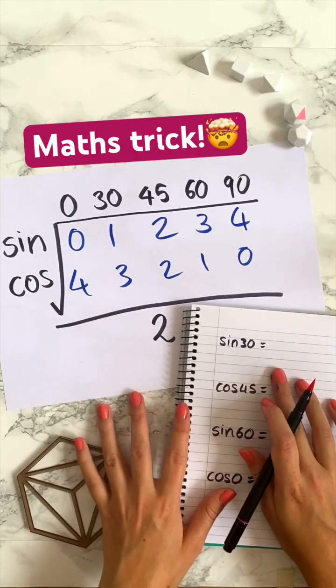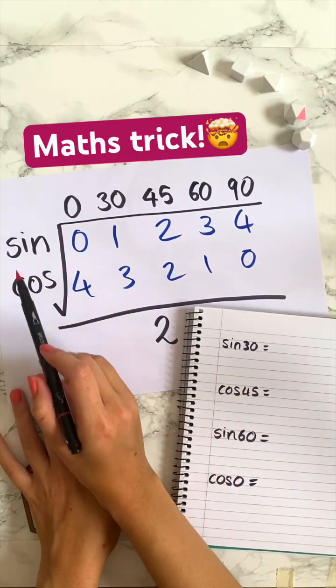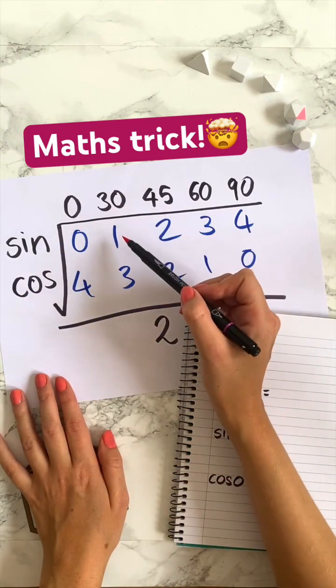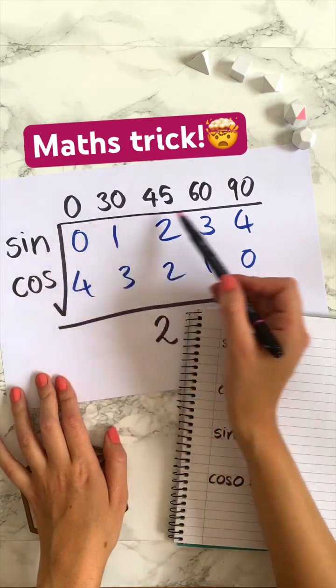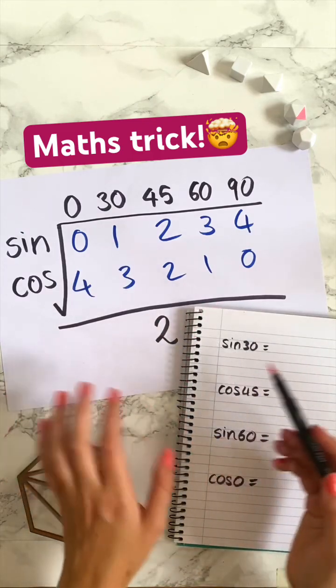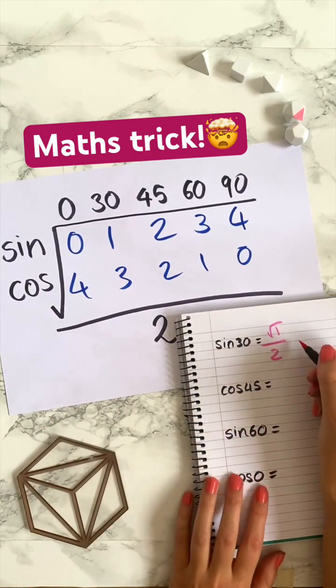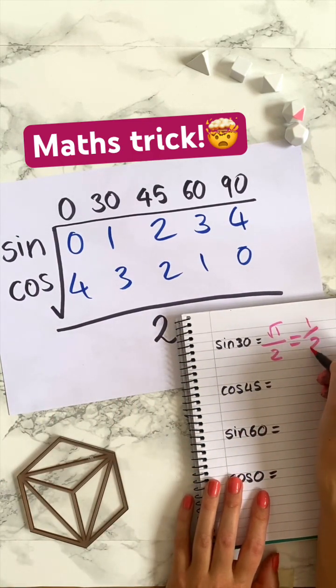Now say you want sine 30. All you have to do is go to the sine row, so we want sine and 30. So that's going to be the square root of 1 divided by 2 and simplifying that, the square root of 1 is just 1, so it's a half.